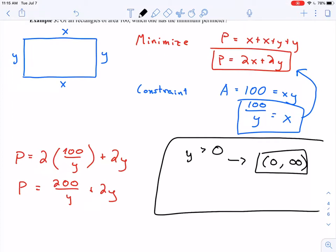So, all right, I'm trying to, just to summarize, I'm trying to minimize P equals 200 over y plus 2y on the interval 0 to infinity. And this one's a little bit different because here we're working with an open interval. So we're going to handle this in a slightly different way.